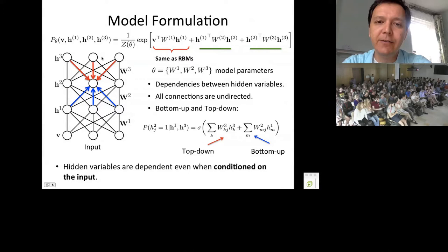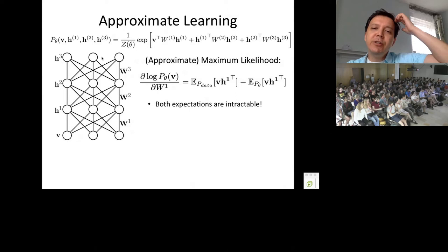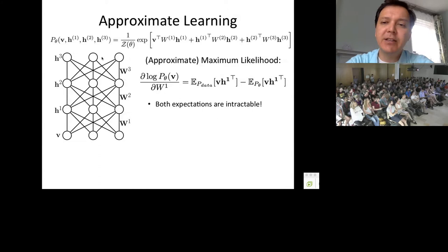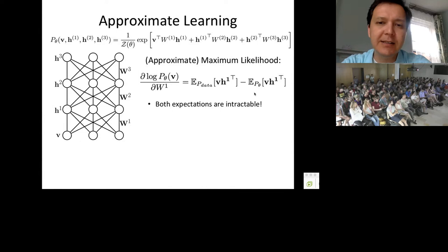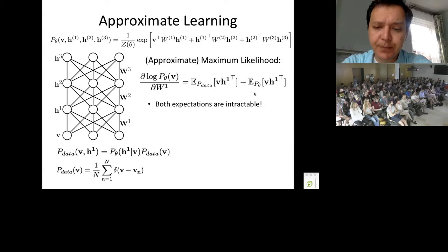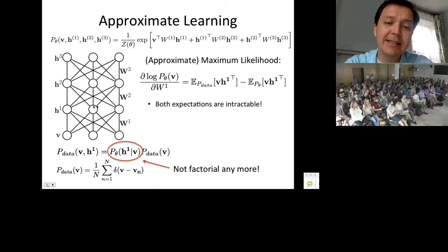For training the Deep Boltzmann Machine, you use approximate maximum likelihood. The learning rule is the difference between expected sufficient statistics driven by the data and expected sufficient statistics driven by the model — the same learning rule for all undirected graphical models including Markov random fields and conditional random fields. For this model, both expectations are intractable because inferring the posterior of hidden states is no longer factorial.